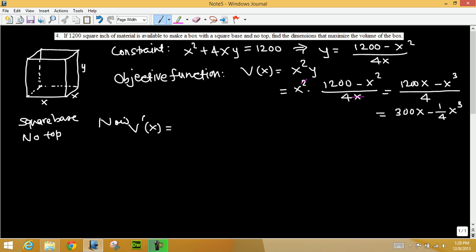Okay, let's say now the derivative V'(x) is 300 minus 1/4 times 3x squared, 1/4 times 3x squared. And we set the derivative equal to 0 and solve for x.